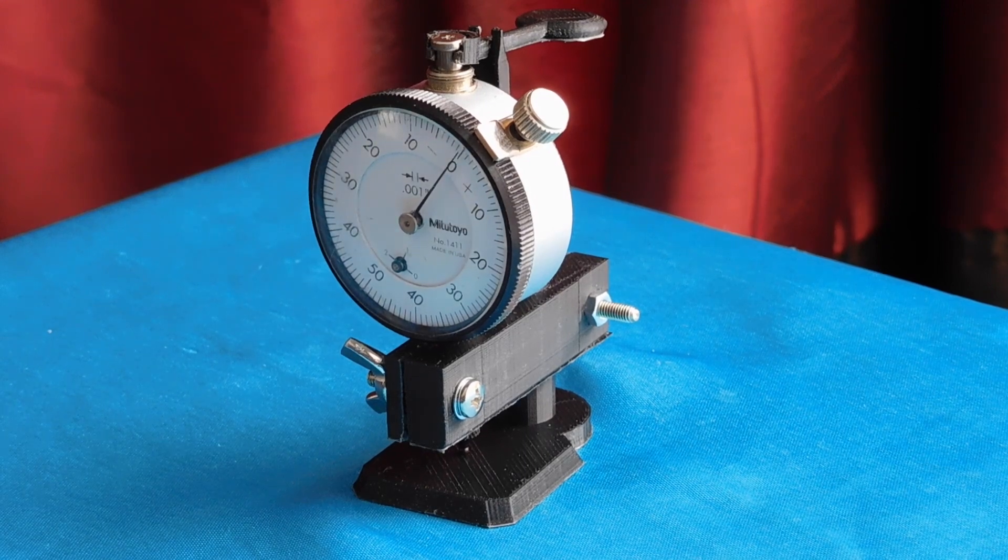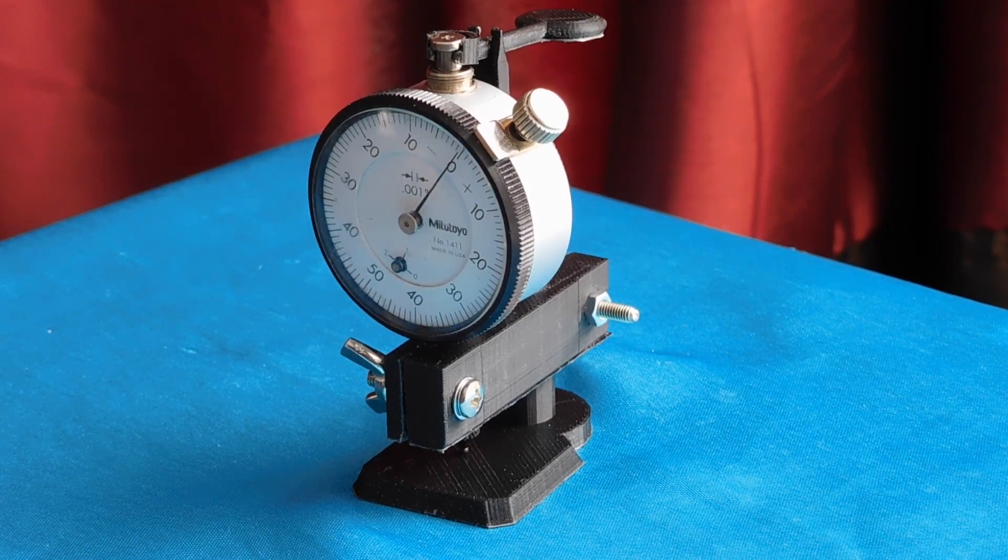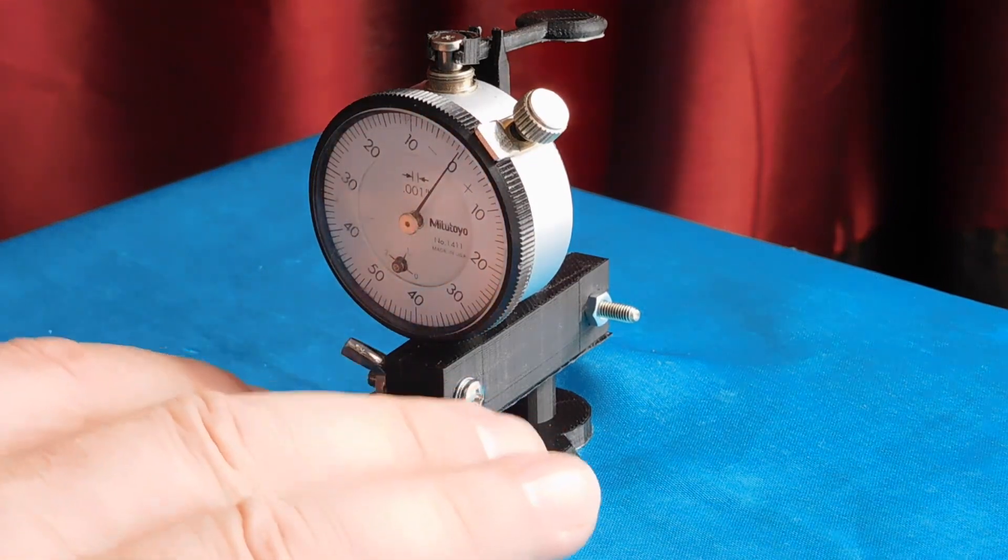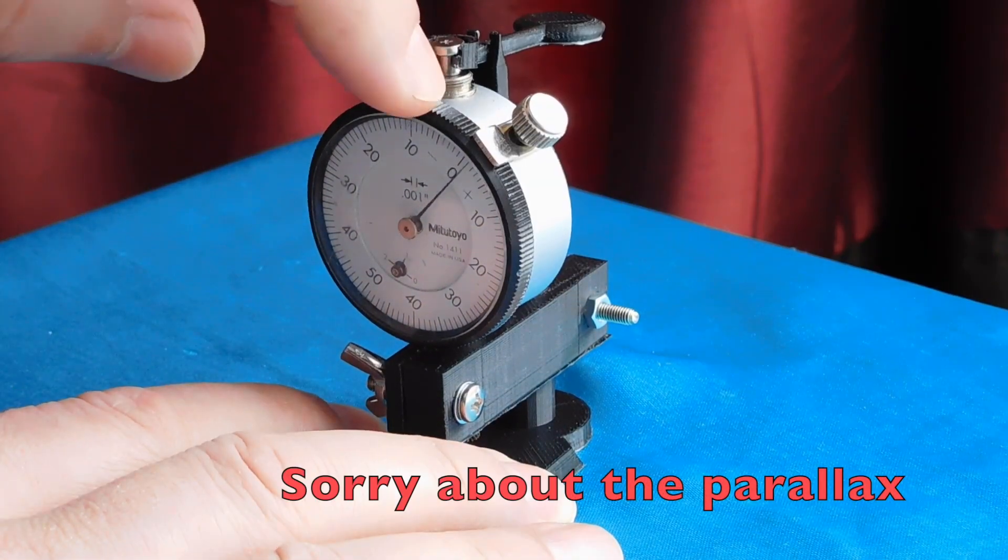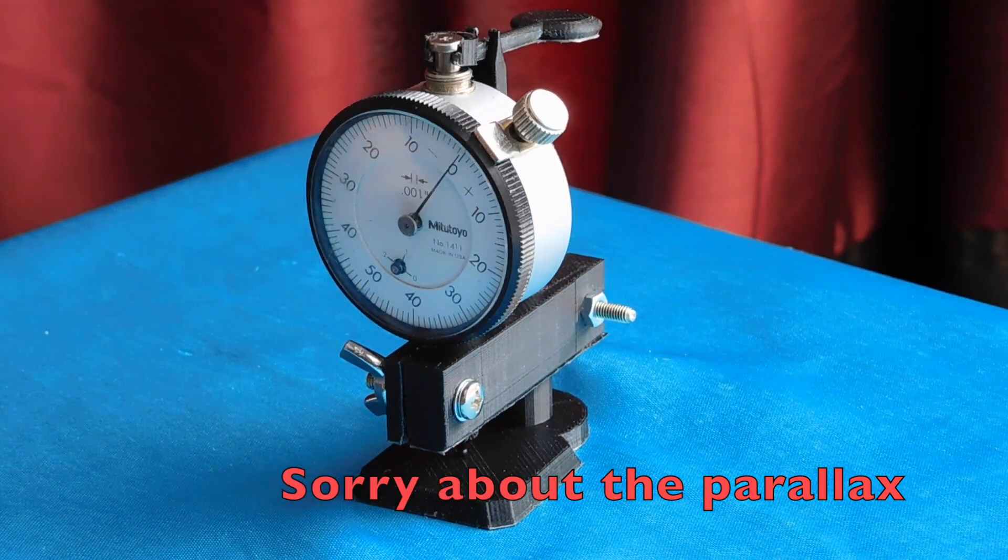Okay, here's a little demo on how the dial indicator stand works. First, you make sure that the meter is zeroed out. It's got a good zero there.